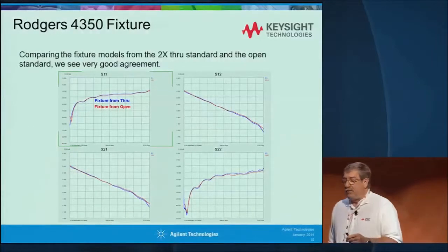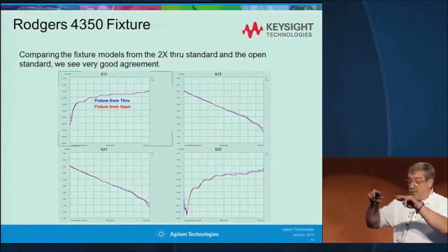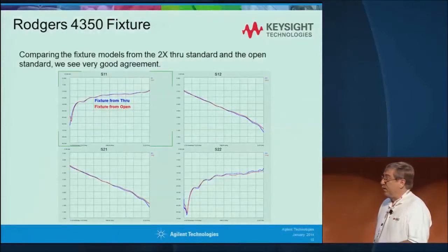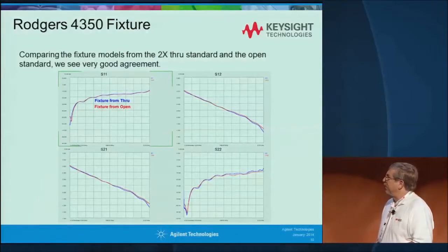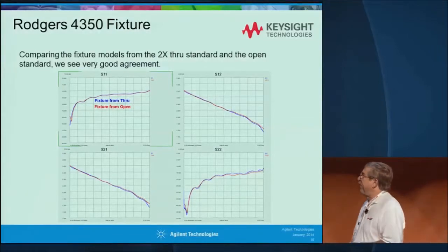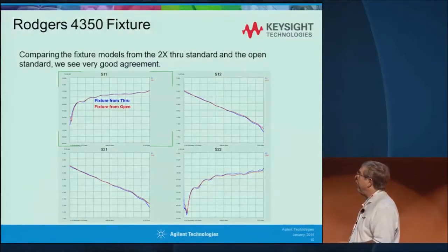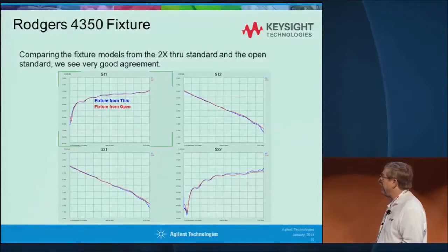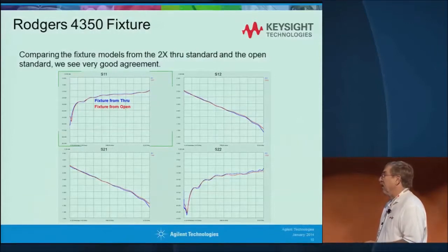I generated two fixture models — an S2P file based on cutting a through in half, or simply measuring an open at the time and generating a fixture. You see the two fixtures are very, very similar: the blue is from the through and the red is from the open. Small differences, but very good correlation between the two. That's the fixture model — an S2P file of that fixture. So now if we de-embed that fixture from the device under test, how well does that work?